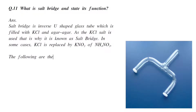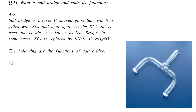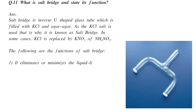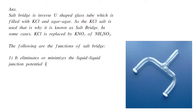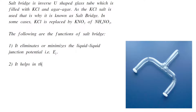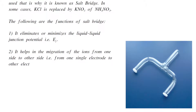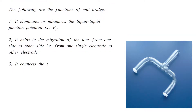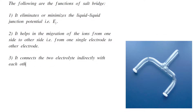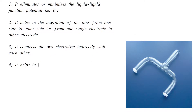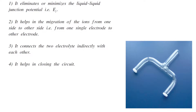The following are the basic functions of salt bridge. First, it eliminates or minimizes the liquid-liquid junction potential, that is Ej. It helps in the migration of ions from one side to the other side, that is from one electrode to the other electrode. Third, it connects the two electrolytes indirectly with each other. And the fourth is it helps in closing the circuit.